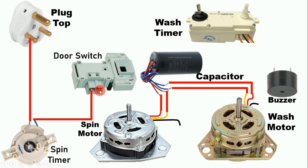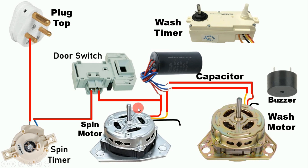Suppose the first and third terminals are the NO contact. Provide input power supply to one terminal, then from the third terminal connect a wire to the running winding of the spin motor. If you start the motor and observe that it is rotating in the opposite direction, remove the wire from the running winding and connect it to the starting winding — this will change the direction of the motor.